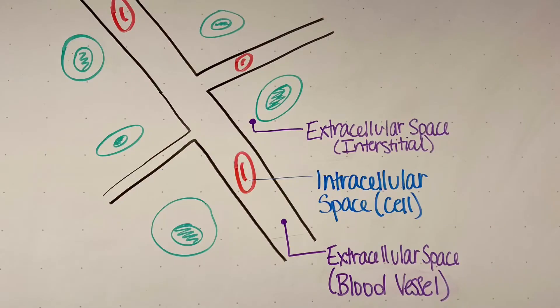Body fluids are distributed between the intracellular and the extracellular fluid compartments. The intracellular fluid compartment is within each cell, and the extracellular fluid compartment is all the fluid that is outside of the cells. This includes fluid in the blood vessels and the fluid that is between the cells, or in the tissue spaces.